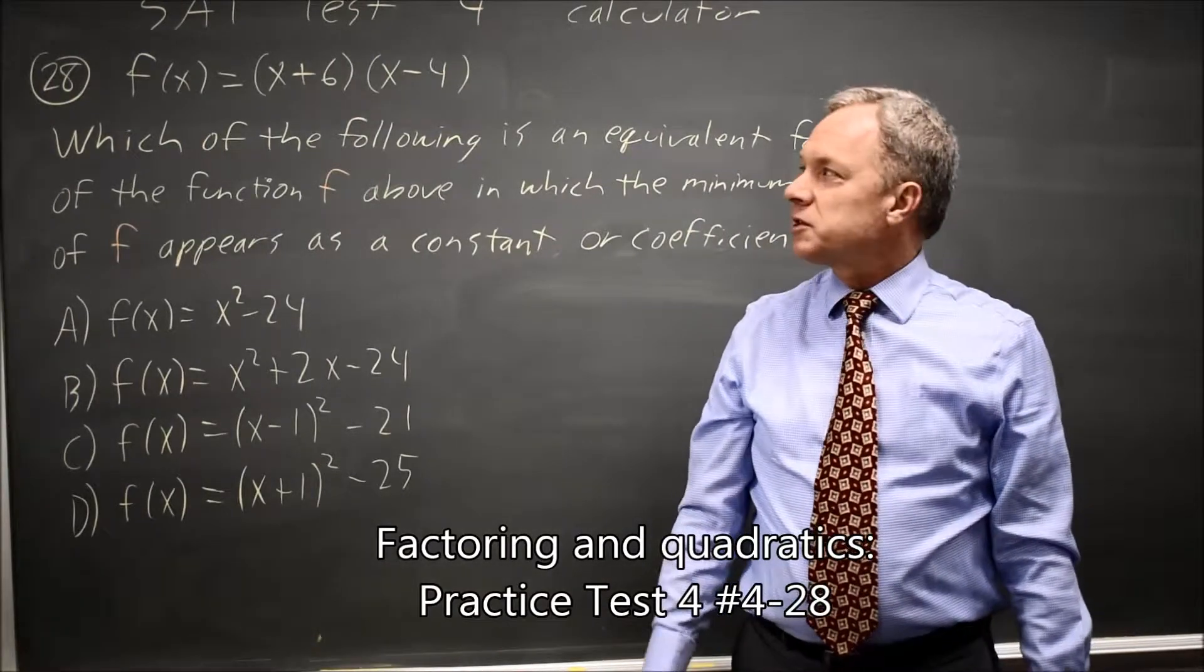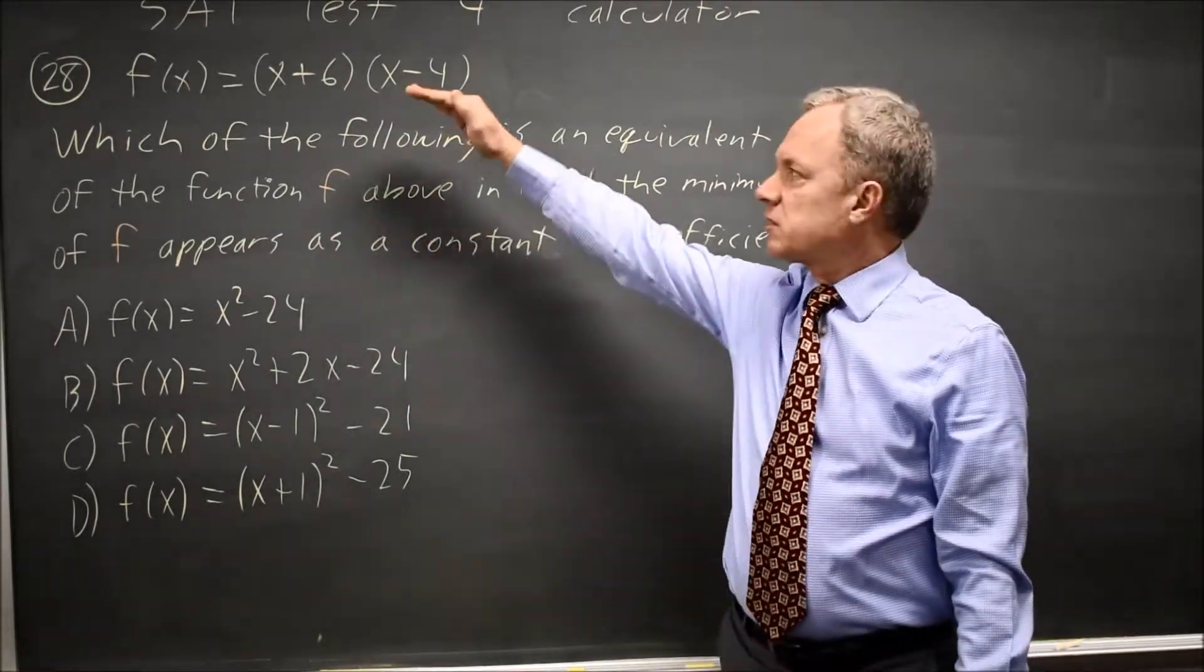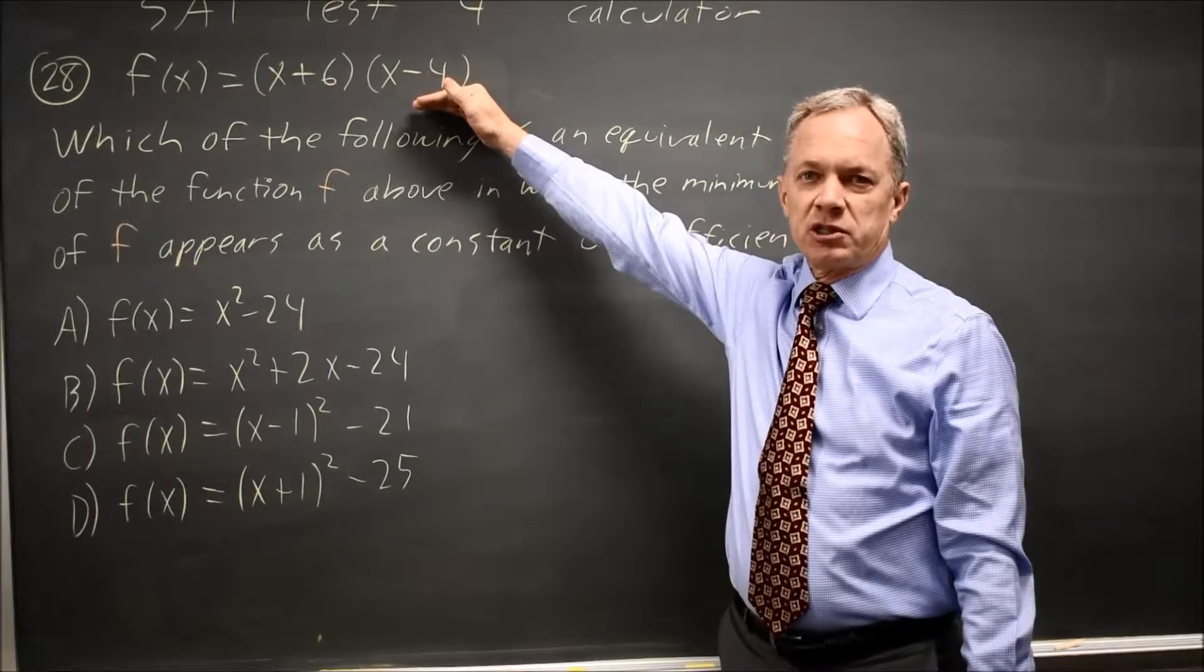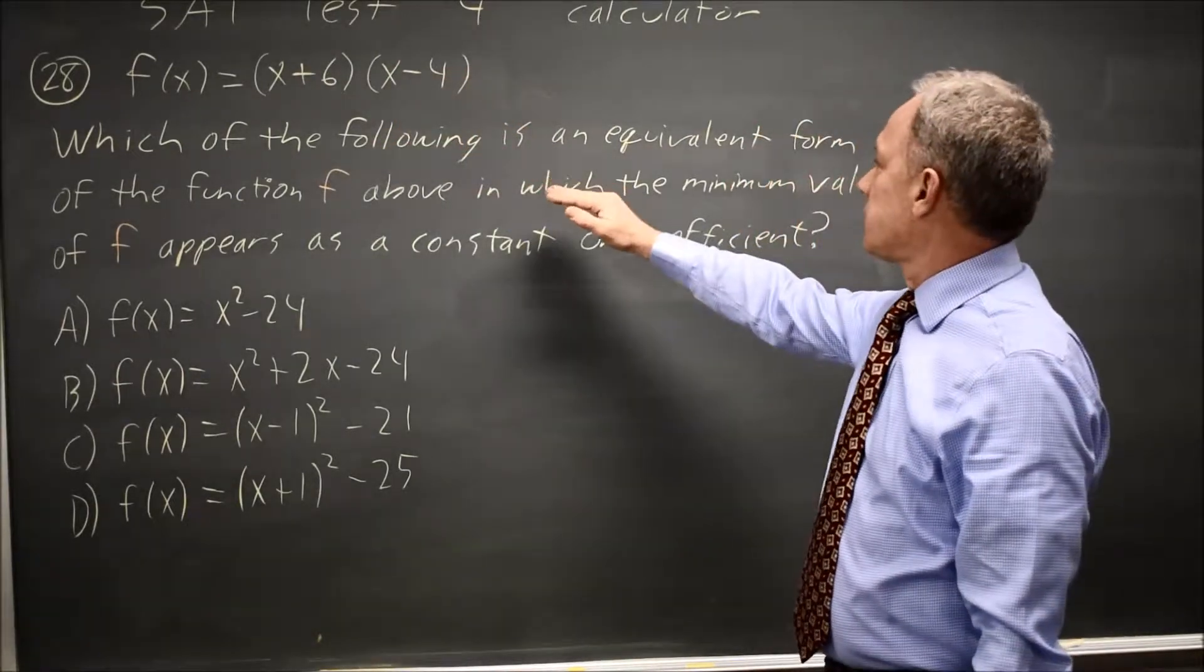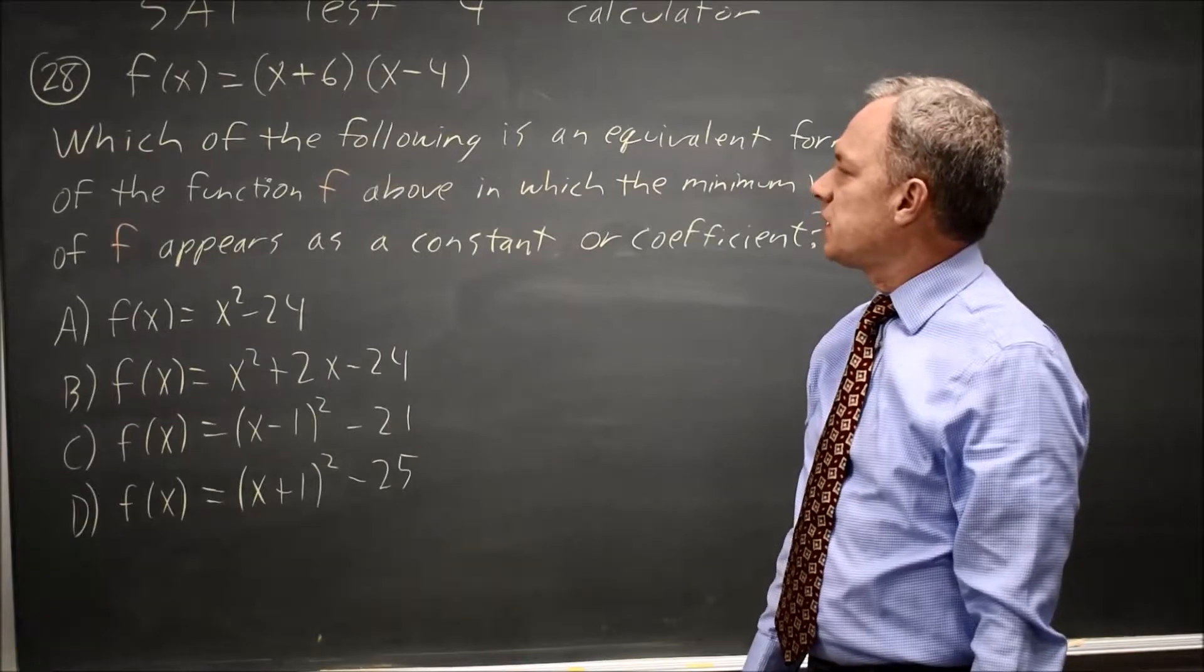This is SAT test 4, calculator question number 28. College Board gives us a quadratic in factored form, a product of two linear expressions, and asks which of the following is an equivalent form of function F above.